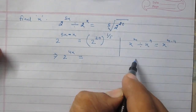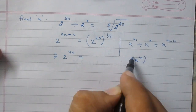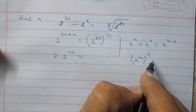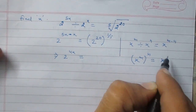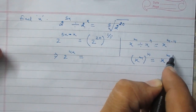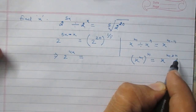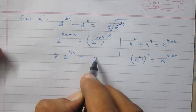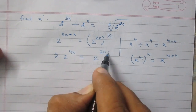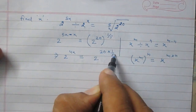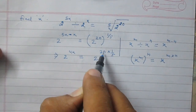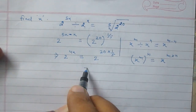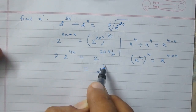Let us consider x raised to the power m raised to the power n. According to the laws of exponents, it is x raised to the power m multiplied by n. So, using this rule here, it is 2 raised to the power 20 multiplied by 1 by 5. 20 multiplied by 1 by 5 gives the result 4. So, it is 2 raised to the power 4.